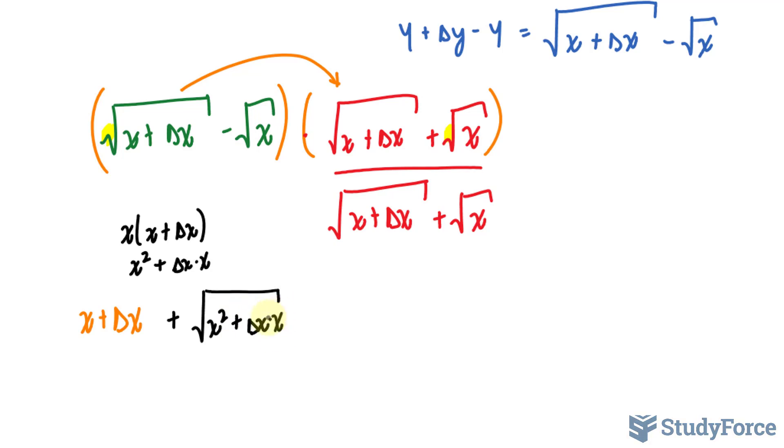I'll erase my work. Now, I'll multiply this term with this term, where I end up with the same expression, except with a minus. So minus the square root of x squared plus delta x times x. And you'll notice right away that this will cancel out with this, which is exactly what we want. We want to rationalize the numerator. And lastly, this term times this term, that gives us the square root of x squared, which is equal to x.